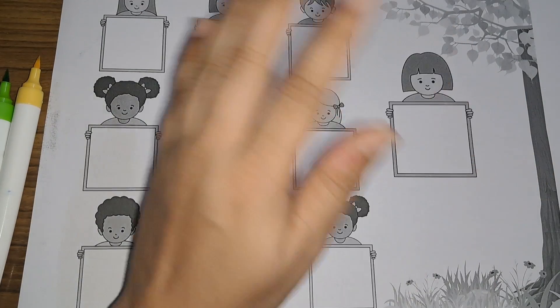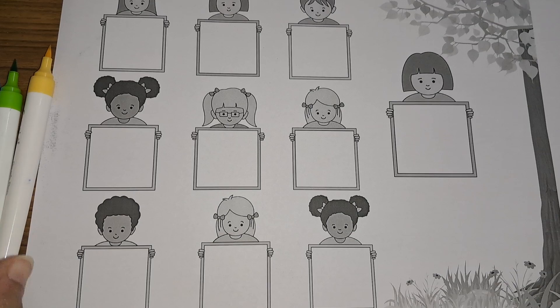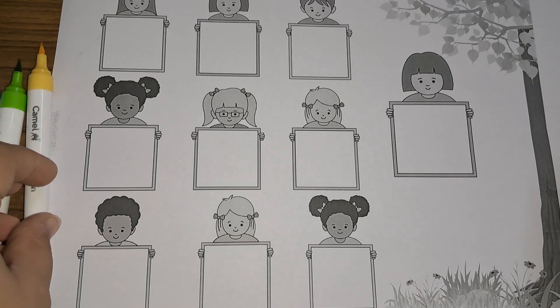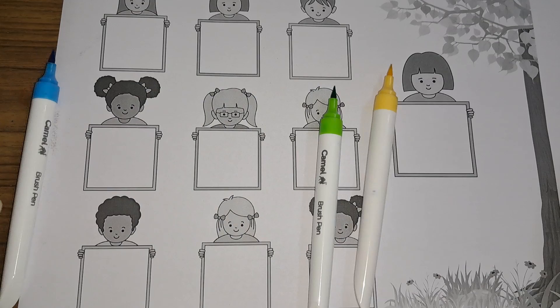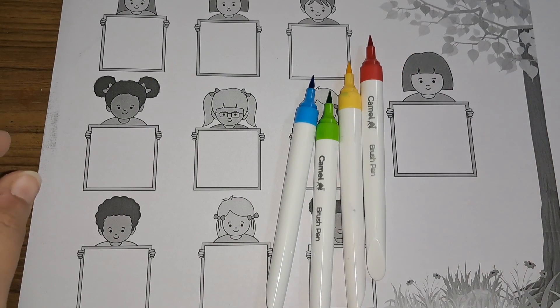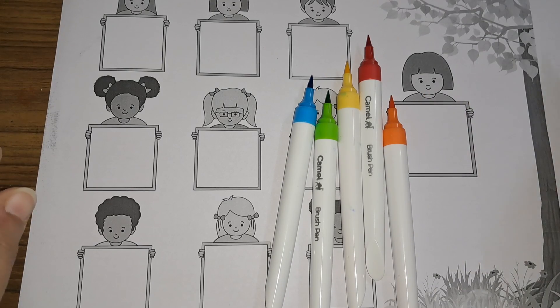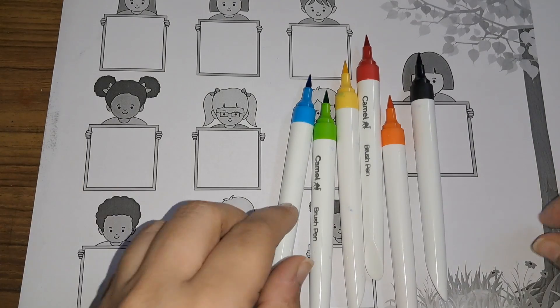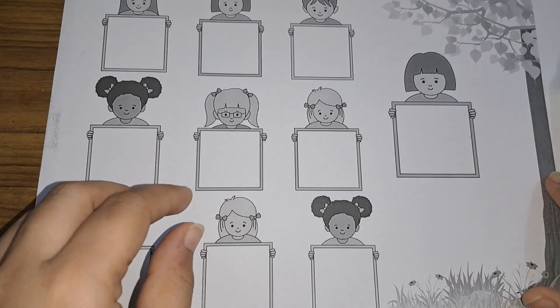Hey kids, let us learn some numbers. First let us learn some colors: yellow color, green color, blue color, red color, orange color, and black color. These are the colors. Now let us learn numbers.